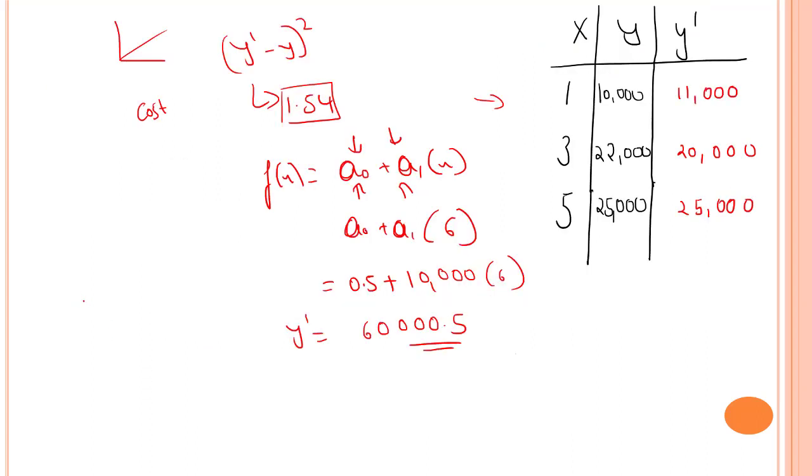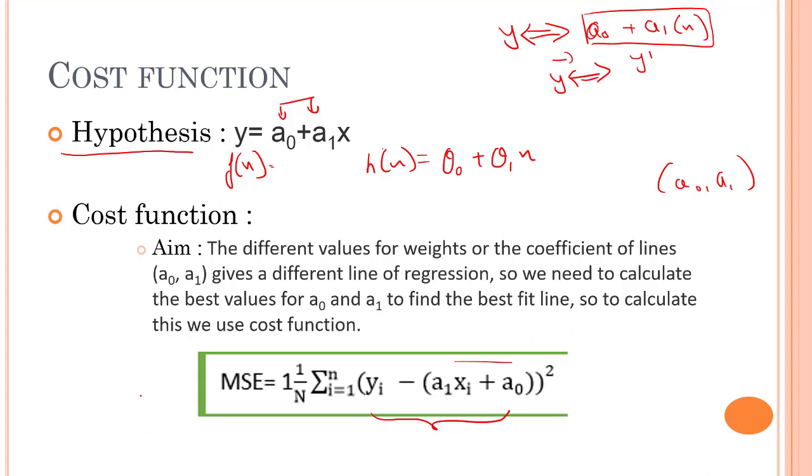What the cost function does is it helps us get the value of a0 and a1 which will actually help us get the straight line. Cost function also optimizes the regression coefficient. It measures how the linear regression model is performed. We can use the cost function to find out the accuracy of mapping function, which maps the input variable to the output variable.